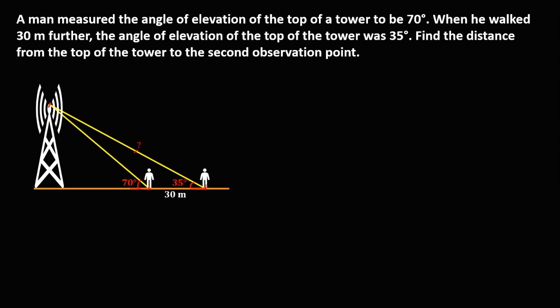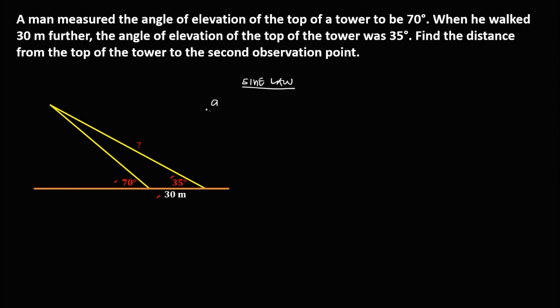This side is the unknown. To solve this problem, since we have an oblique triangle, we can use the Law of Sines or the Law of Cosines — it depends on the given. Since this problem gives us two angles and a side, we can solve it using the Law of Sines. The formula is: side A over sine angle A equals side B over sine angle B equals side C over sine angle C.